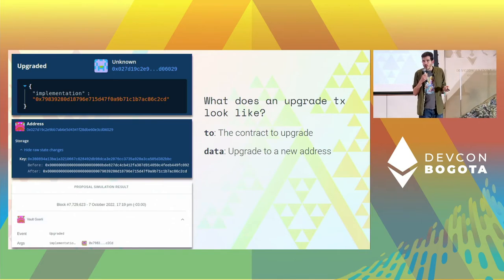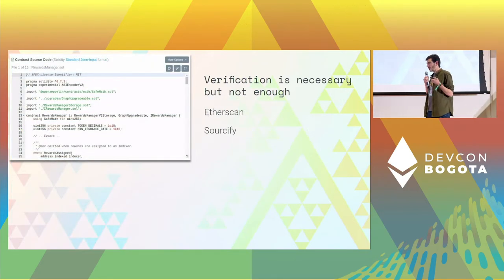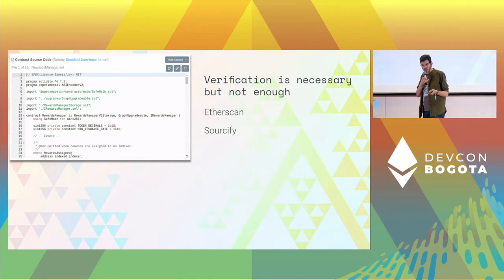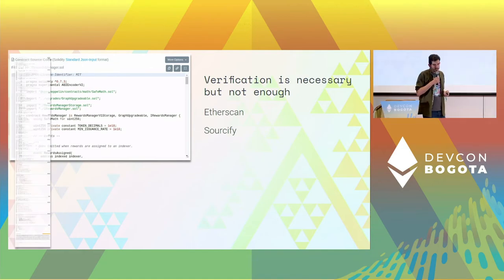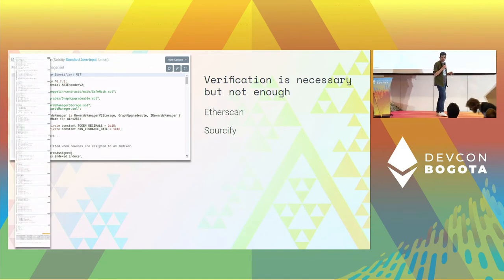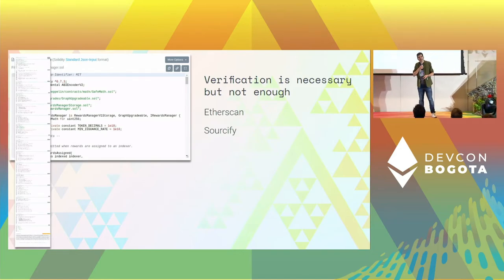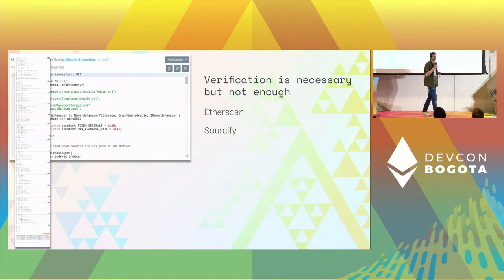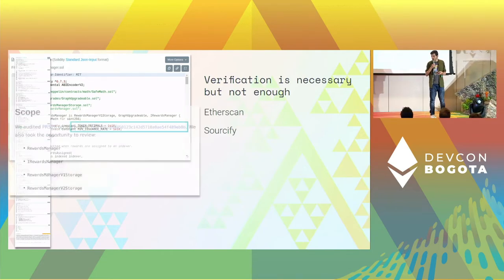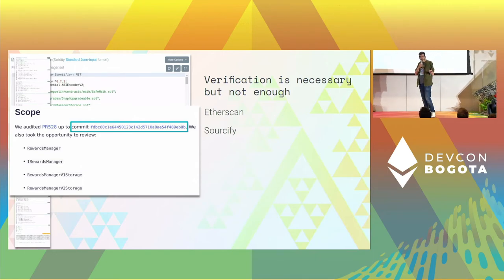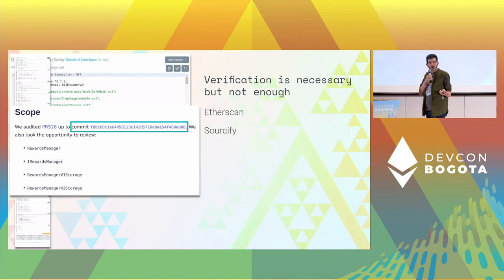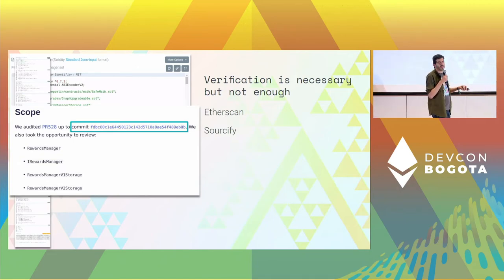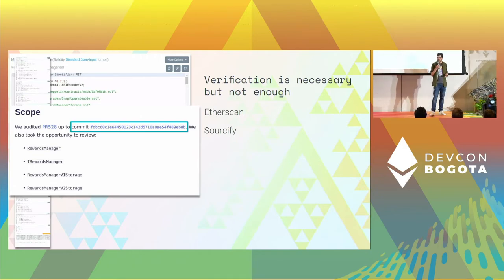That's a problem: what information does an address carry? The address should have verified source code on Etherscan or Sourcify. But the source code can be thousands of lines spread across 16 different files — no signer is going to review that. What a signer can review is a report from an auditor or developers saying they reviewed the code at this version and it looks good. That's what they should use to decide whether to agree to an upgrade or not.